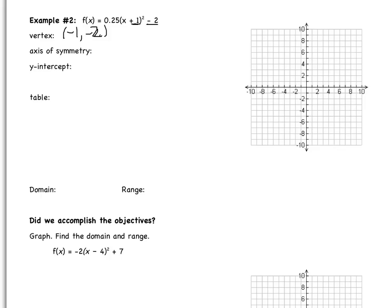Remember that the axis of symmetry is always an equation. It's vertical, so it's x equals, and then looking at my vertex, x equals negative 1. The y-intercept is going to be 0, some number. To find that number, I need to substitute in 0. I get 0.25 multiplied by 0 plus 1 squared minus 2. 0 plus 1 squared is just 1, so I get 0.25 minus 2, which is negative 1.75. So that's my y-intercept.